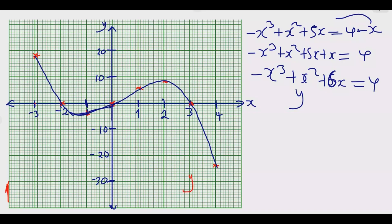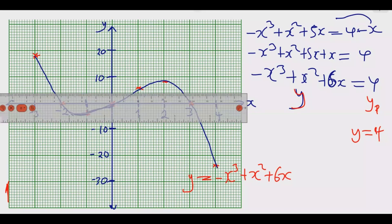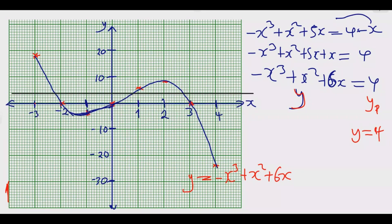So we have Y₁ = −x³ + x² + 6x, which is our original curve, and Y₂ = 4 — a horizontal line. Draw the line Y = 4 using a ruler. The black horizontal line represents Y = 4. Where this line intersects the curve gives us our solutions — there is a first, second, and third point of intersection.